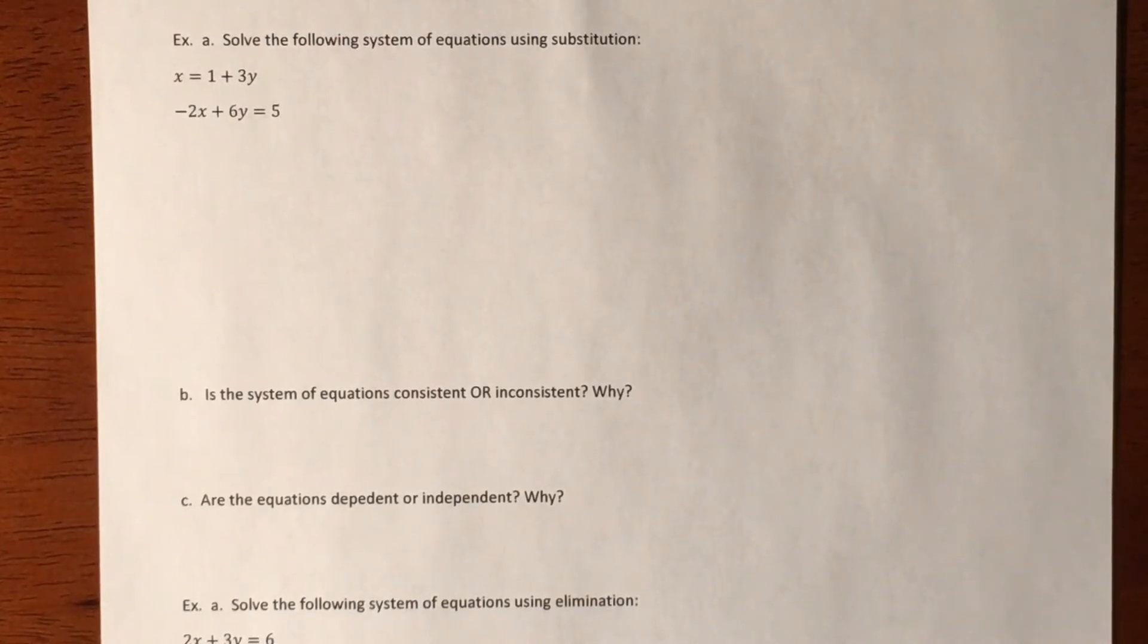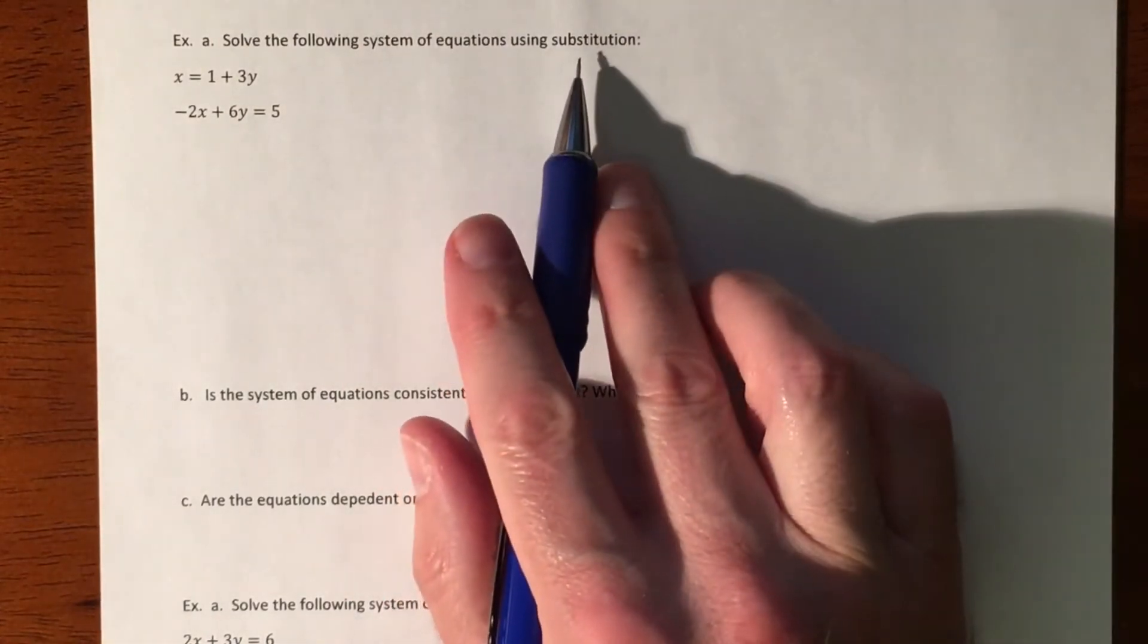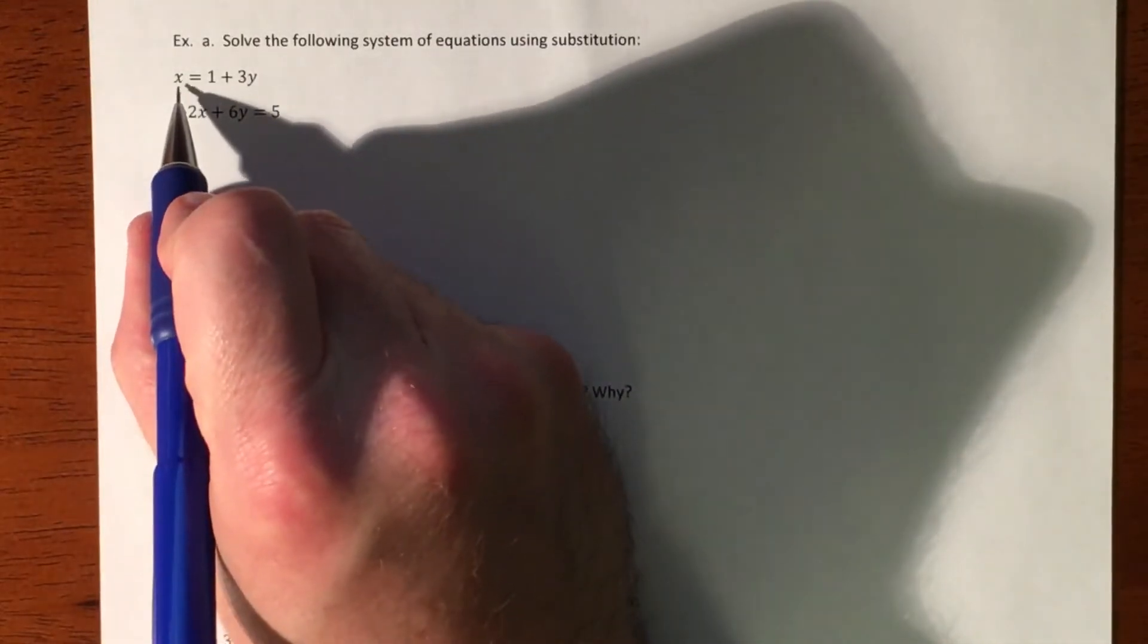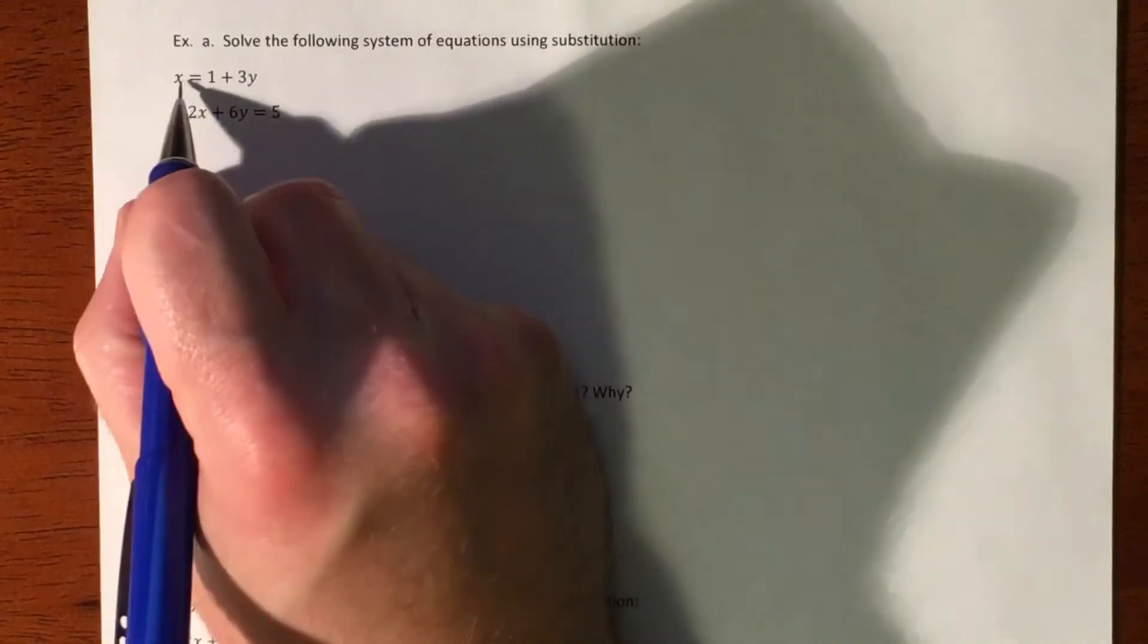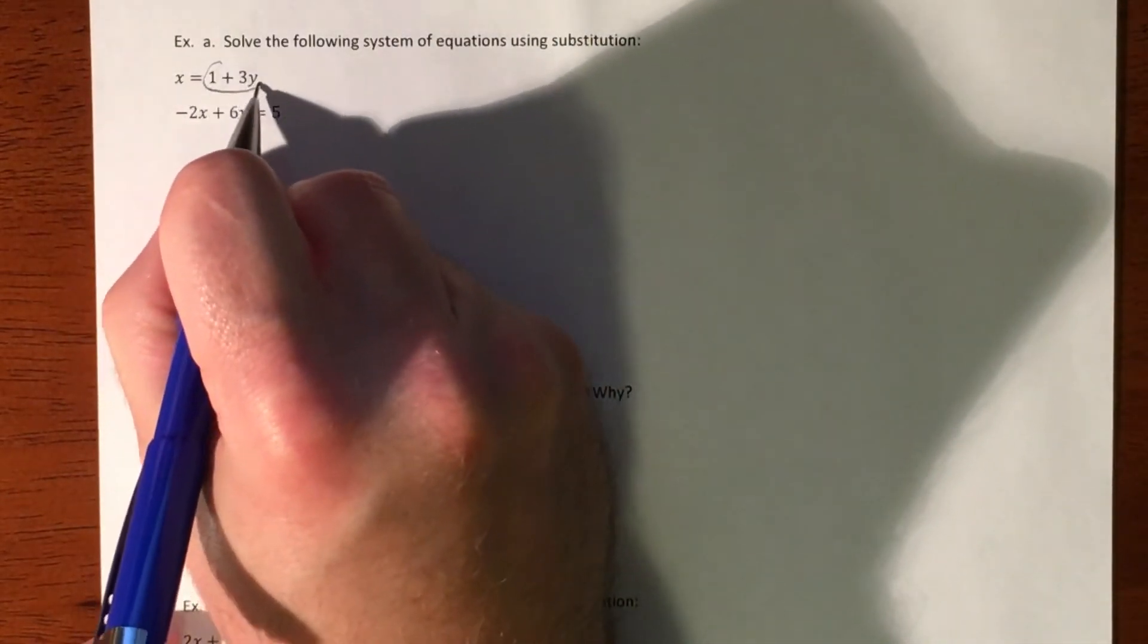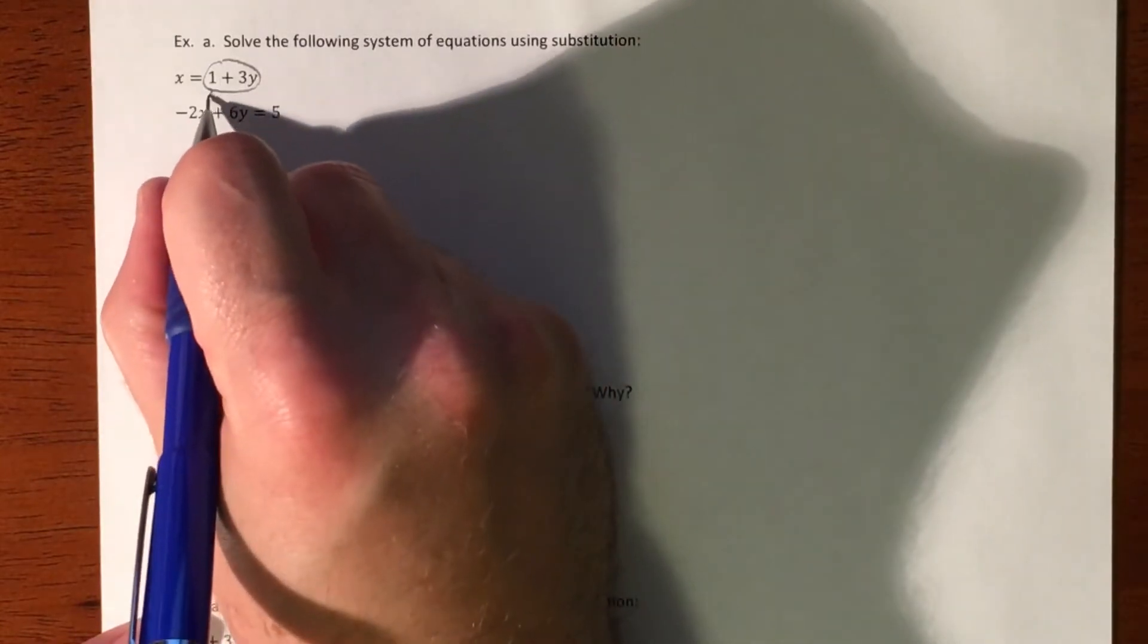In this example we are going to solve a system of equations using substitution. The reason substitution is suggested is because there's already a variable by itself, so I can take what x equals and substitute it right in.